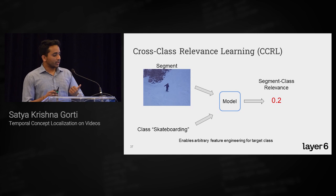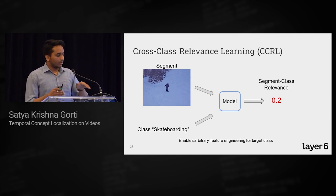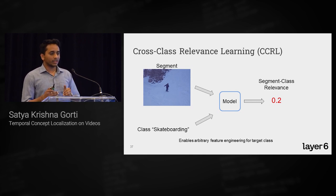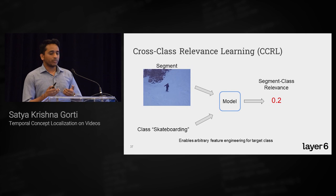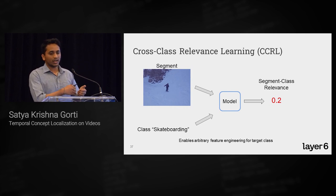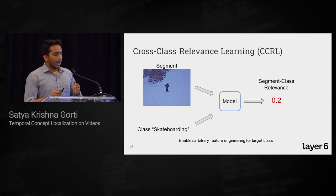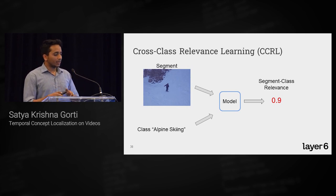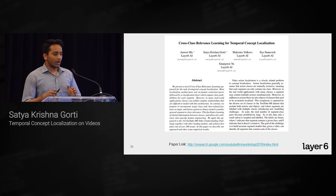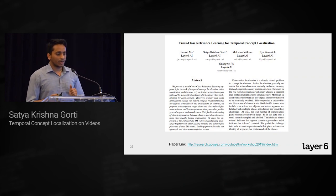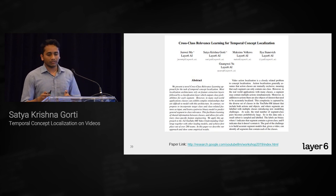For example, if the segment is someone skiing and the class embedding is skateboarding, they don't match, so the model should predict low segment-class relevance. If the class embedding is alpine skiing, we'd want a very high relevance score. This framework opens up arbitrary feature engineering on the class embedding. Check our ICCV paper for more details.